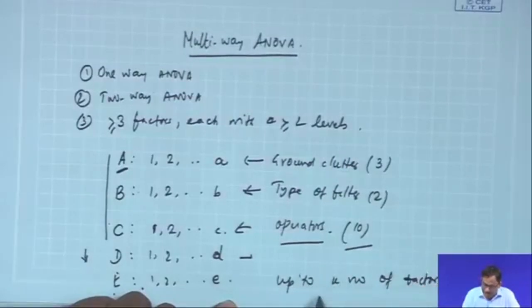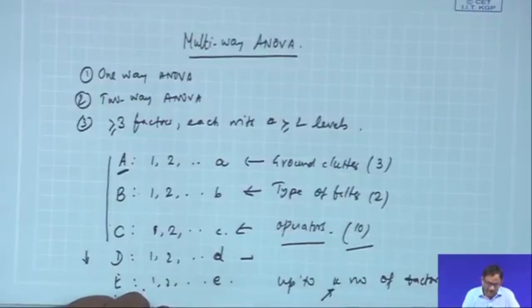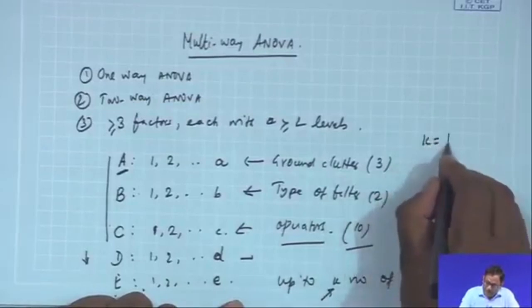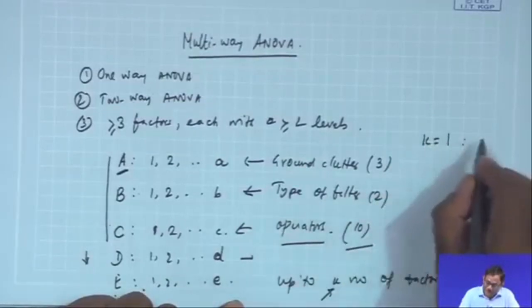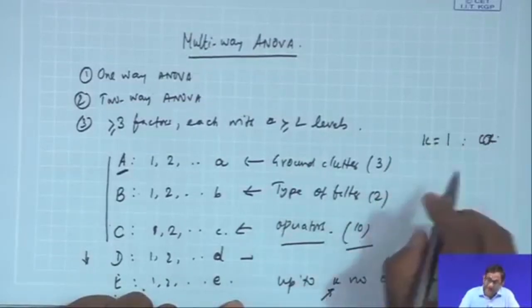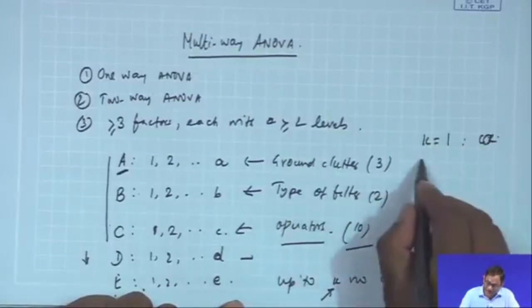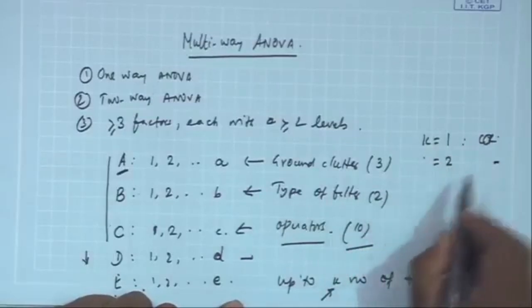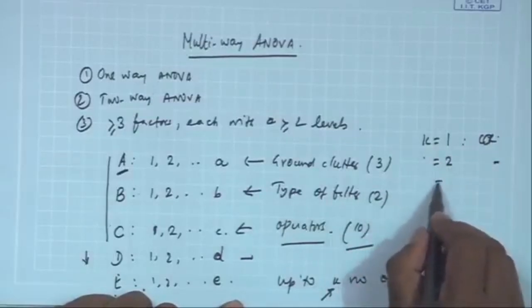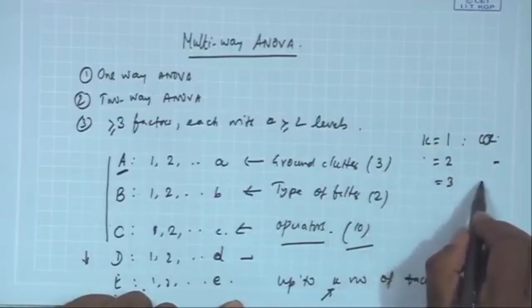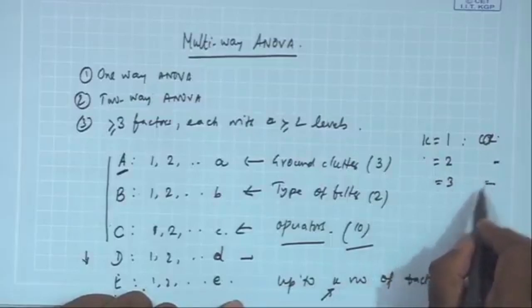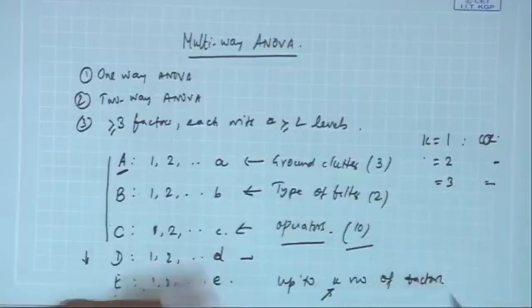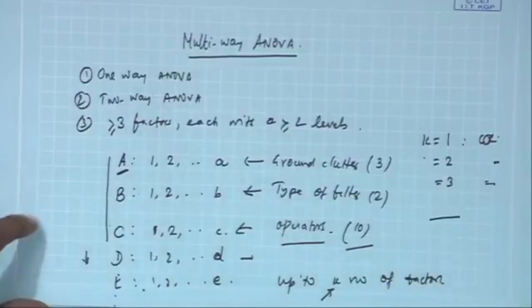K can be any value. If K equal to 1, this is a one-factor experiment. K equal to 2, two-factor experiment. K equal to 3, three-factor experiment. K equal to 4, four-factor experiment, and so on up to a K-factor experiment.